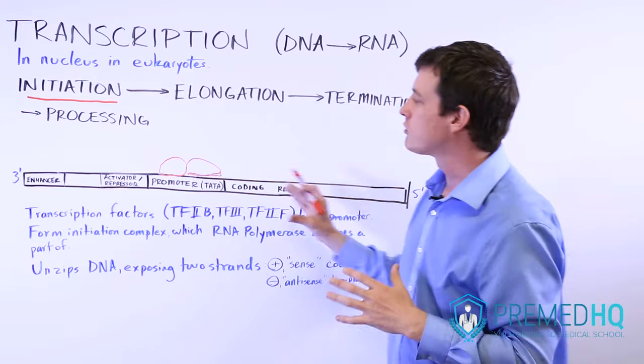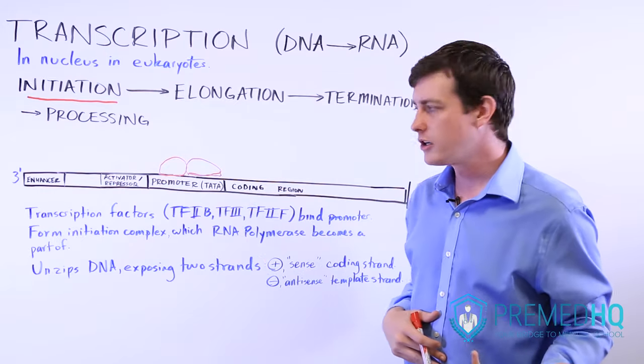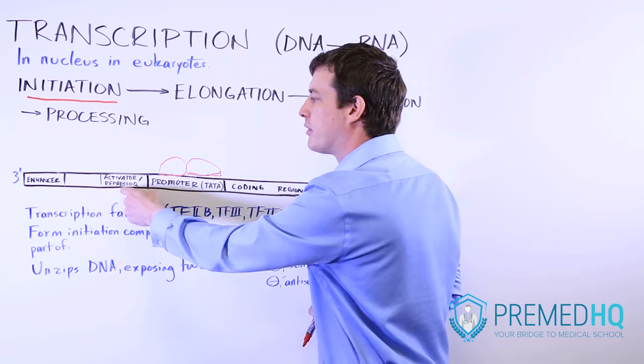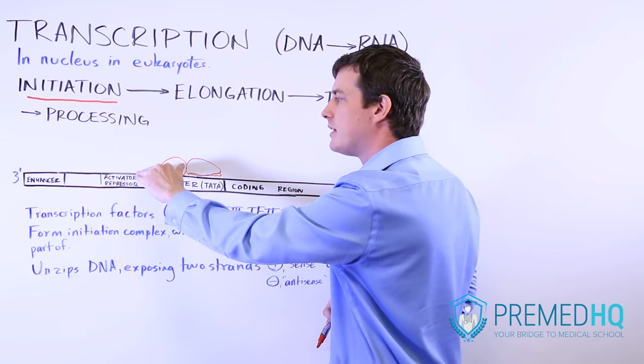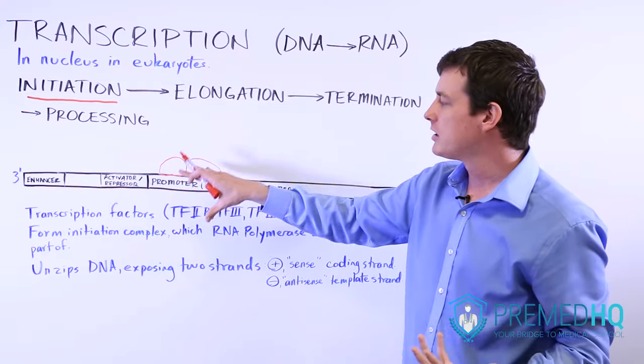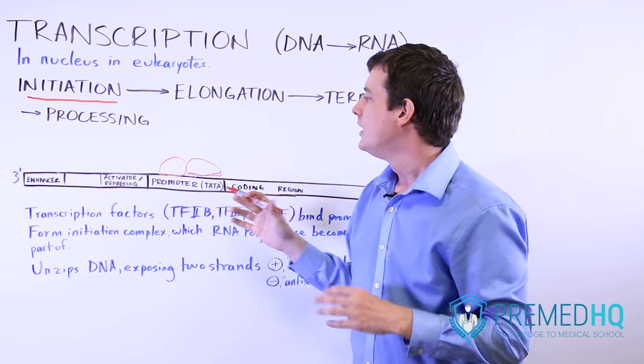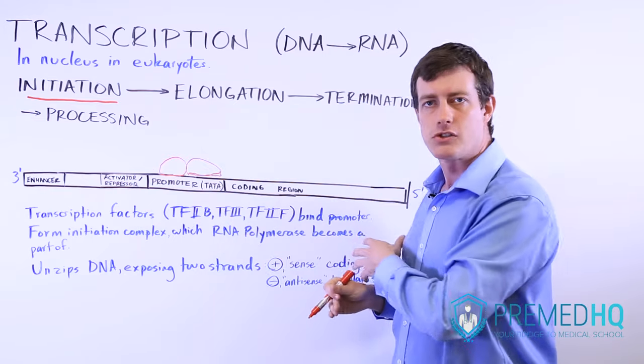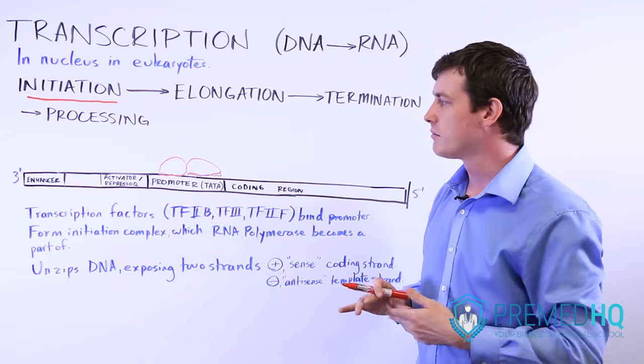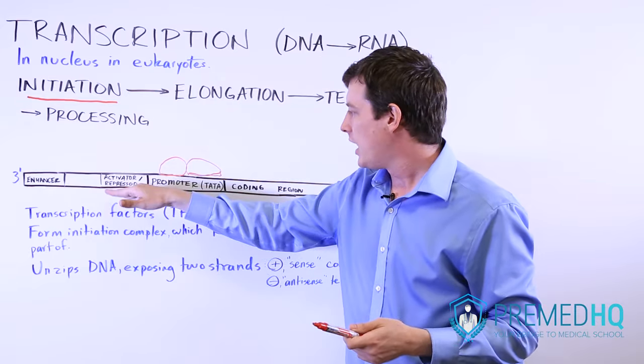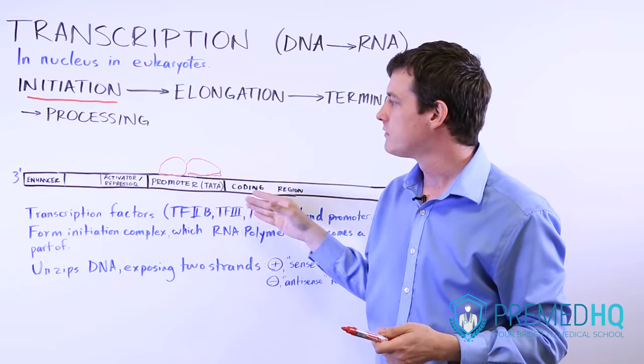However, there are upstream places that allow us to control the level of transcription that's occurring. You have activator and repressor regions, which are very close to the promoter. Perhaps proteins will bind there or something that facilitates formation of the initiation complex. So if things bind the activator region, then you're more likely to see transcription. You may also have repressors, which are the opposite. Repressors are something where if a protein finds it and binds that repressor, you're less likely to see an initiation complex form.